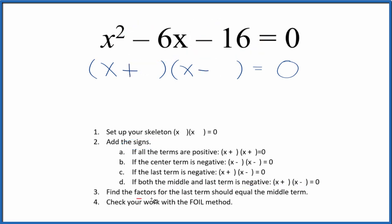Once I have the signs, now I can find the factors for the last term, that negative 16, and they should add up to the middle term, negative 6. So the factors for 16, and I can see 2 times 8, that would give me 16, and the difference between 2 and 8, that's 6.